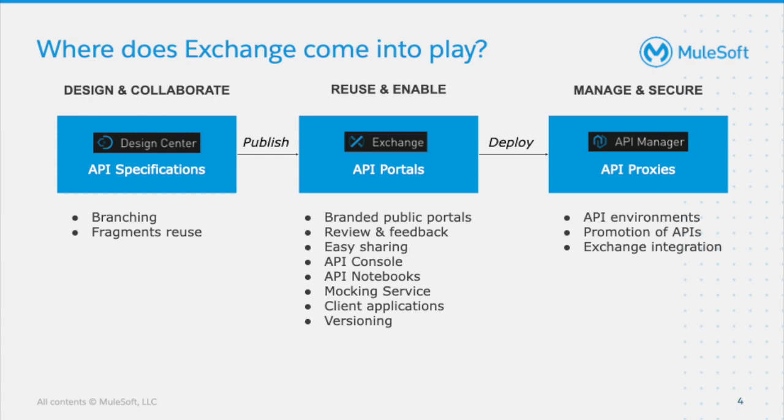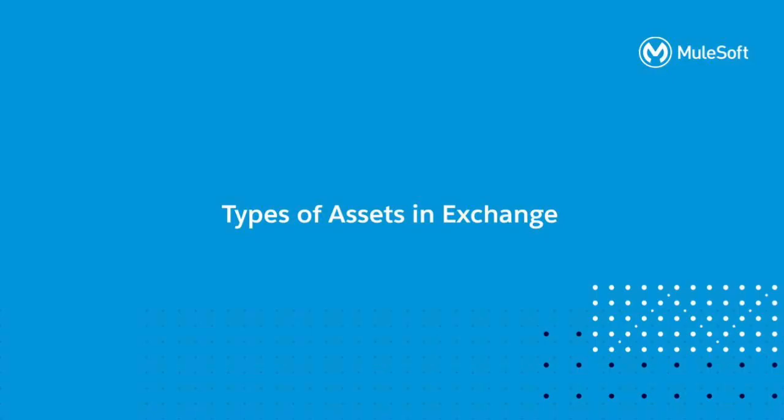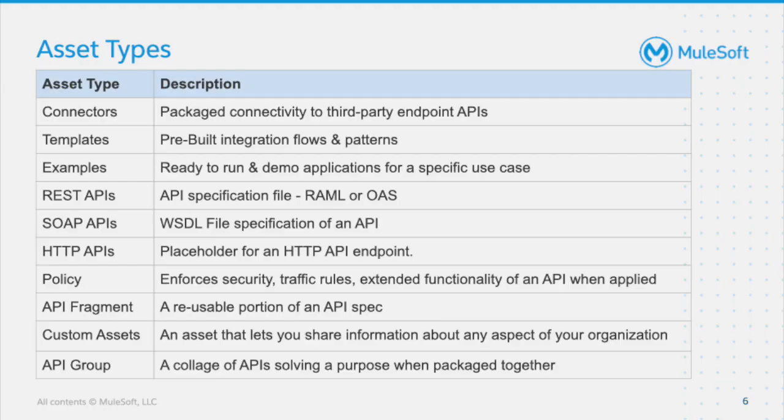That's where you see the value of Exchange between your managing and design parts, and how much reuse and enablement it can provide within your software development lifecycle. Now that we have discussed what Exchange is and where it resides in the API lifecycle, let's discuss what types of assets we can actually host in Exchange. The main type of asset stored in Exchange is connectors, which essentially are pre-packaged connectivity to third-party systems like Salesforce or Twilio.